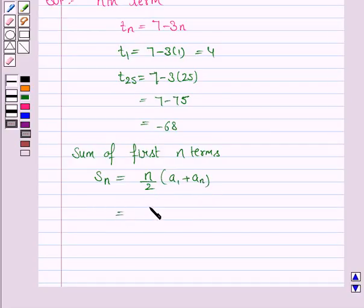Now here we have to find the sum of first 25 terms. So it is S25 equals 25 by 2 into A1. A1 is the first term and An is the 25th term, since it is T25.